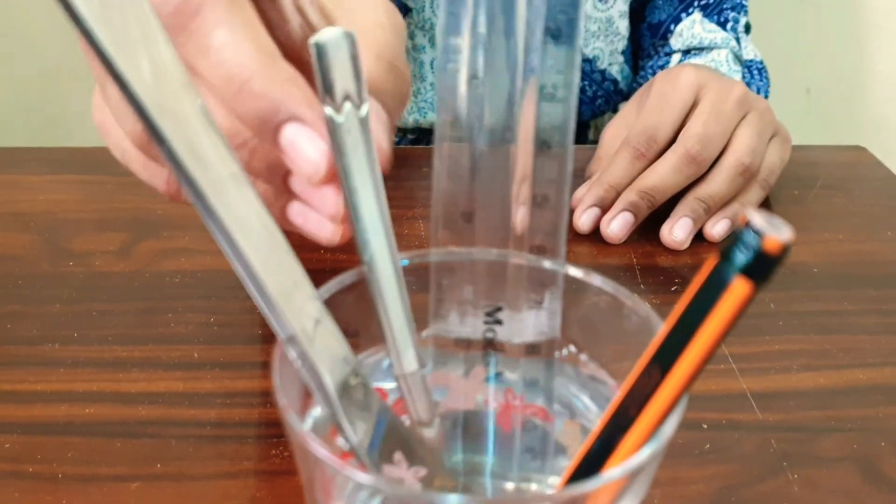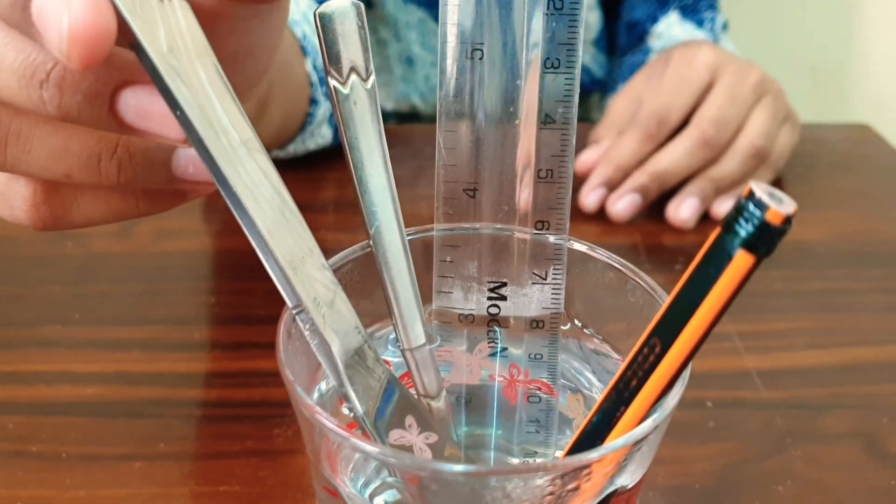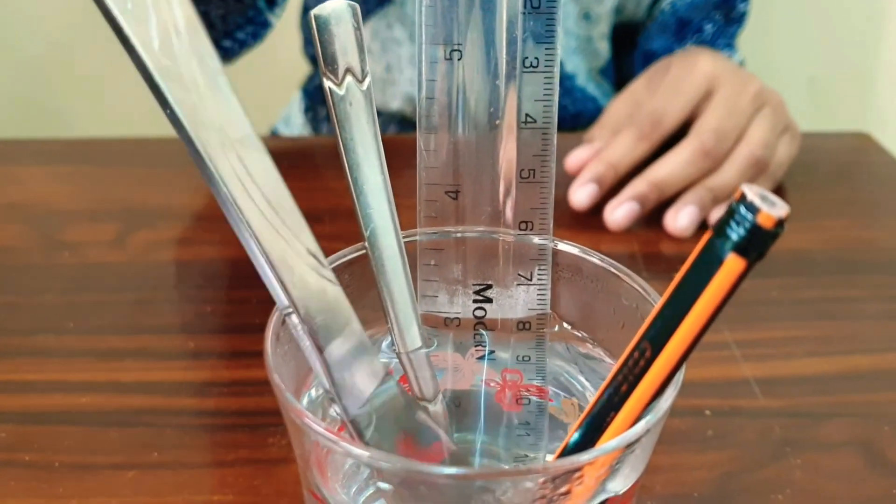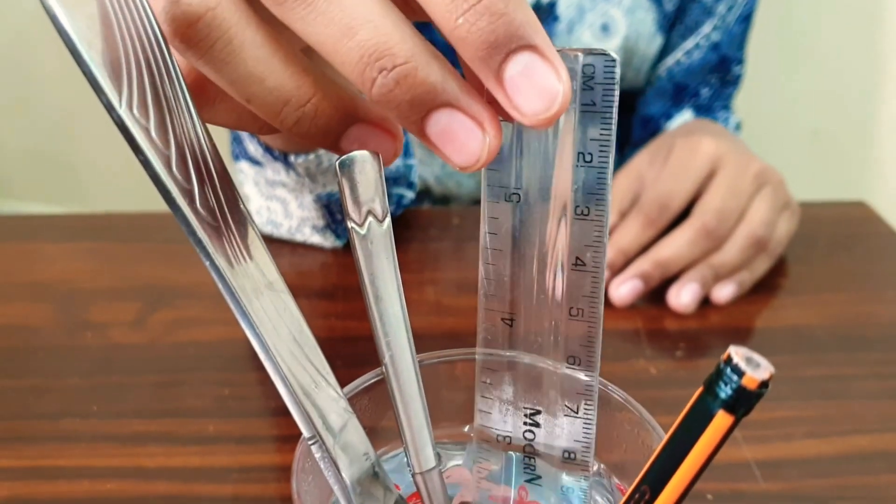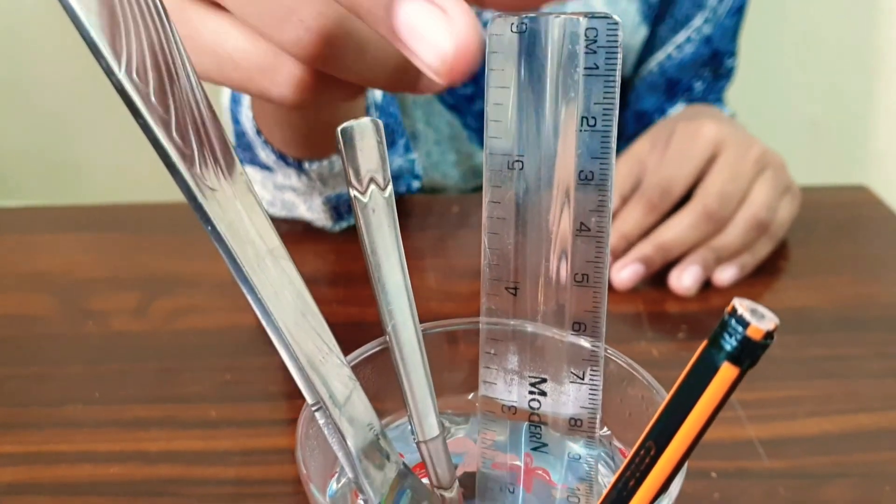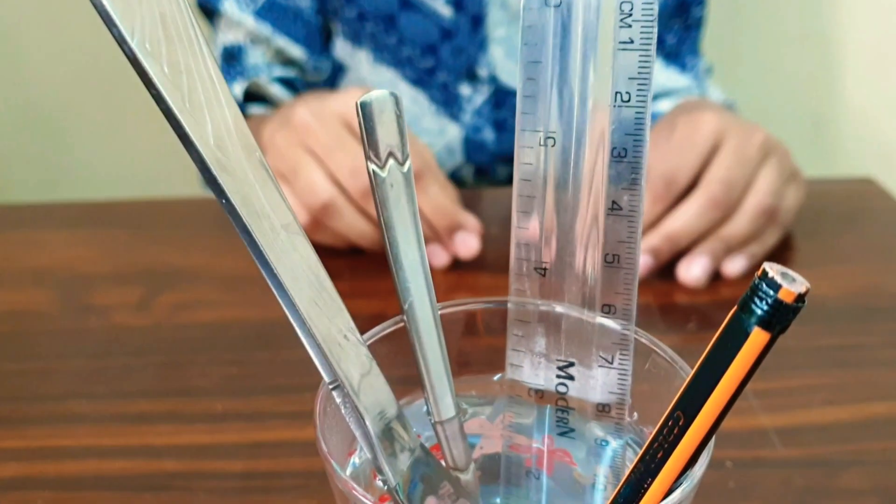You'll find out that these two objects, which are metal and steel, are heated at the end. But these two objects, the ruler and the pencil, are not heated and we cannot feel the heat.